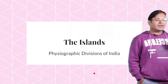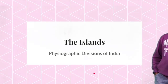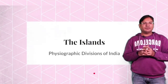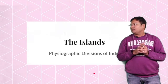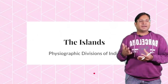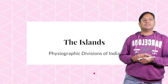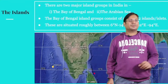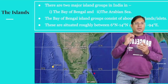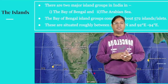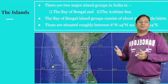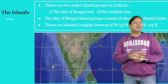Here we are going to study about the island groups of India. India has two island groups — one in the Arabian Sea and one in the Bay of Bengal. In the Bay of Bengal there are the Andaman and Nicobar Islands, and in the Arabian Sea there are the Lakshadweep Islands. The island groups of India are divided into these two parts.